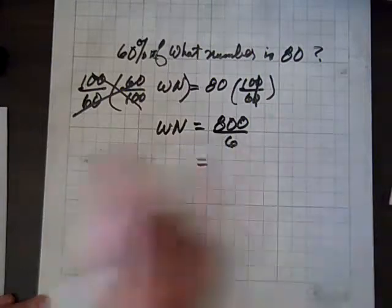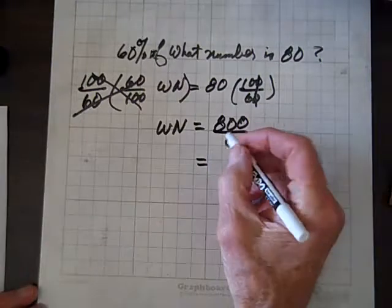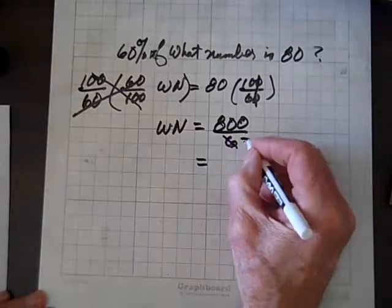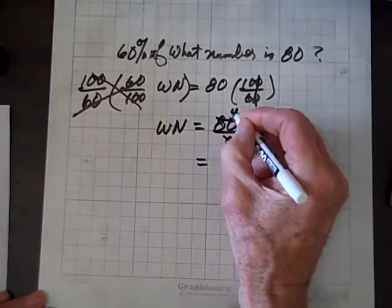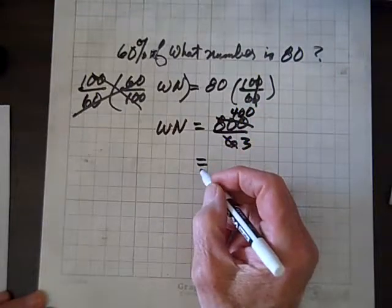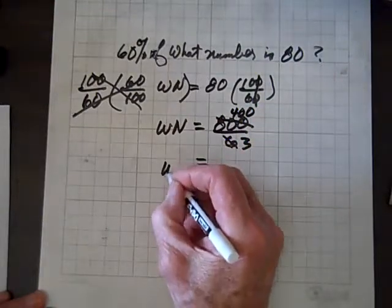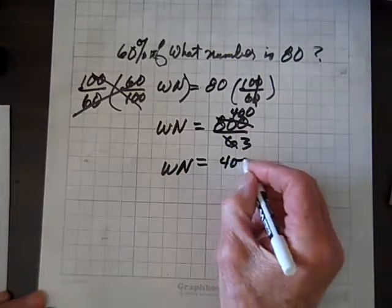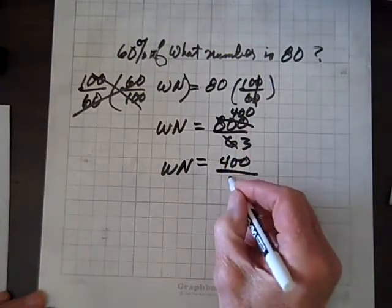And if you want, we'll just go to the calculator. Well, for crying out loud, look. 2 goes into 6 3 times, and 2 goes into this 400 times. So we have WN equals 400 divided by 3.